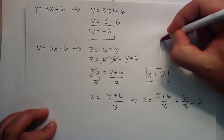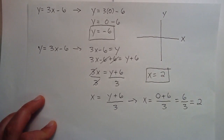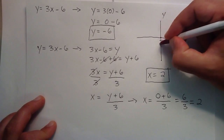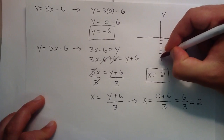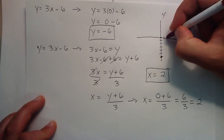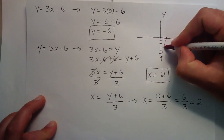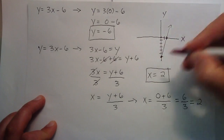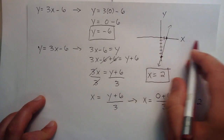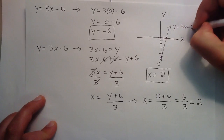So if we were to sketch this line quickly: here's our y axis, here's our x axis, and we have y equals negative 6. We start at the origin and go down negative 1, 2, 3, 4, 5, 6 units in the y direction, and positive 2 units in the x direction. We put a point there where it crosses the x axis. Connecting these two dots gives us a rough sketch of our line. And there we go — we found where it crosses the y axis and the x axis, and from that we can draw a quick sketch of y equals 3x minus 6.